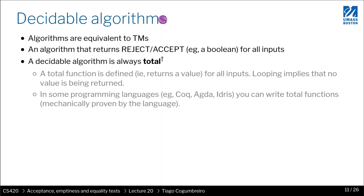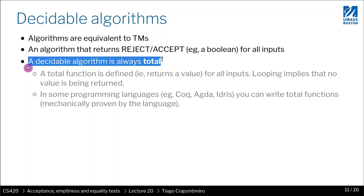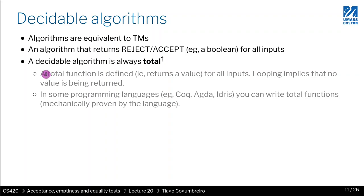To recap, decidable algorithms are just Turing algorithms that we can prove always terminate. They can be implemented in any language. You may also hear people referring to programs that always terminate as total. This comes from mathematics - a total function is one that is defined for all inputs. If you can show your function returns a value for every input, that function is total.